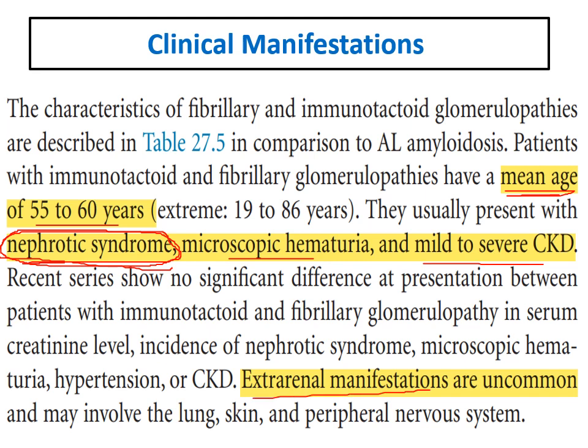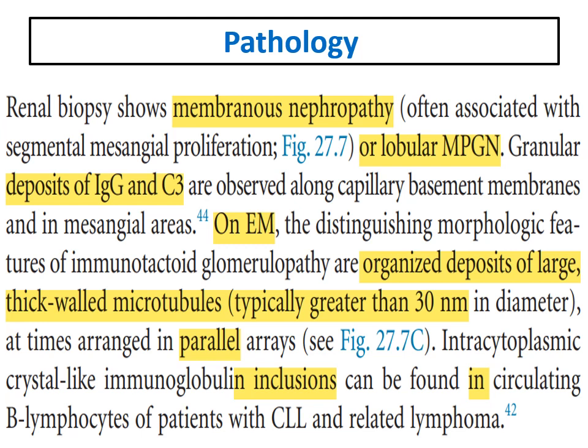Extra-renal manifestations in immunotactoid are not common — it is not like amyloidosis or systemic vasculitis. It mainly affects the kidney.